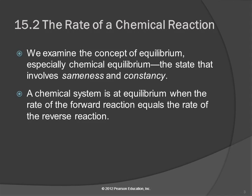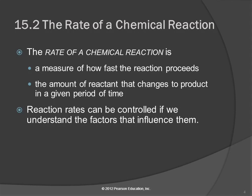This concept of chemical equilibrium implies sameness and constancy. A chemical system is at equilibrium when the rate of the forward reaction equals the rate of the reverse reaction. The rate of a chemical reaction is like the rate of speed of a car — it's the distance traveled per unit time. The rate of reaction is how fast the reaction proceeds: the amount of reactant that changes to product in a given period of time, such as a number of moles per second.